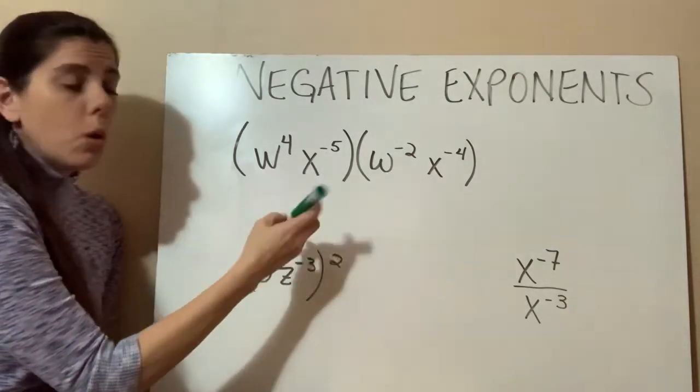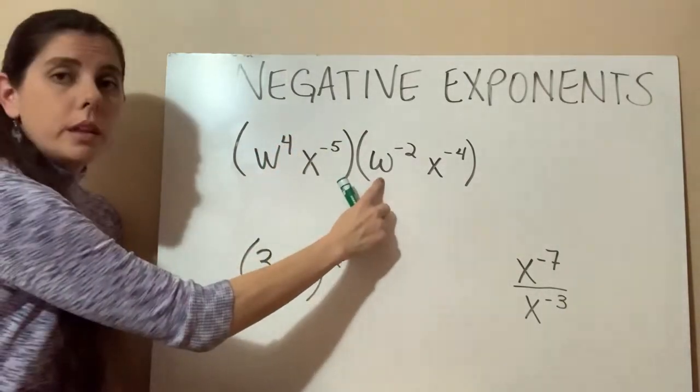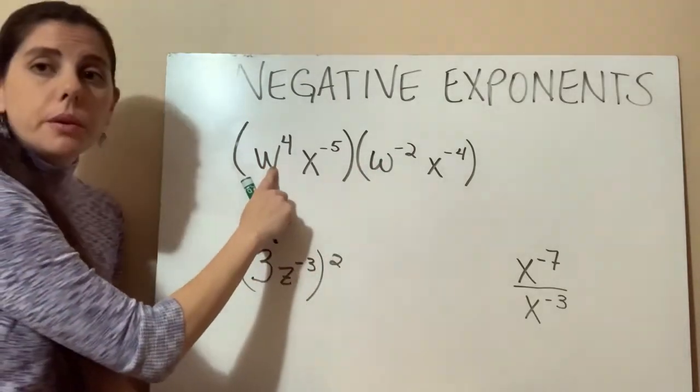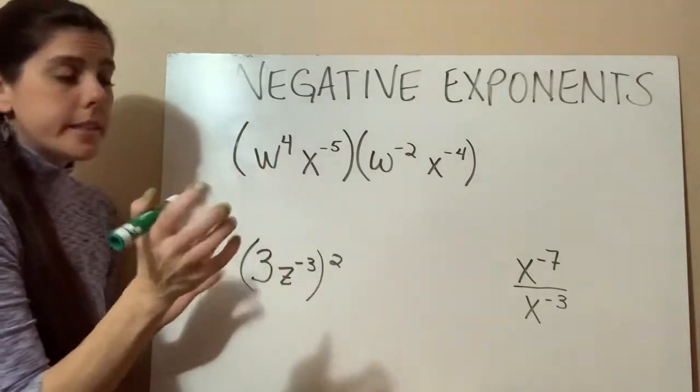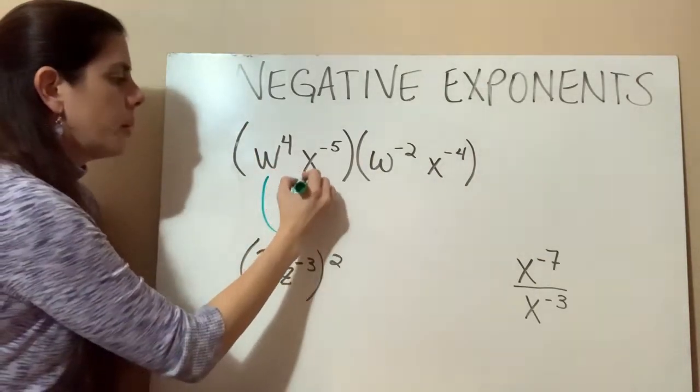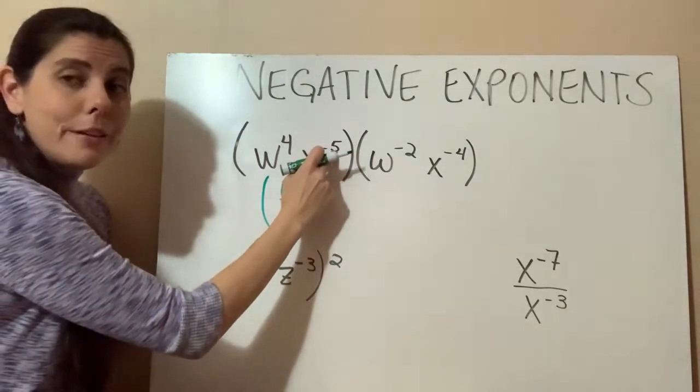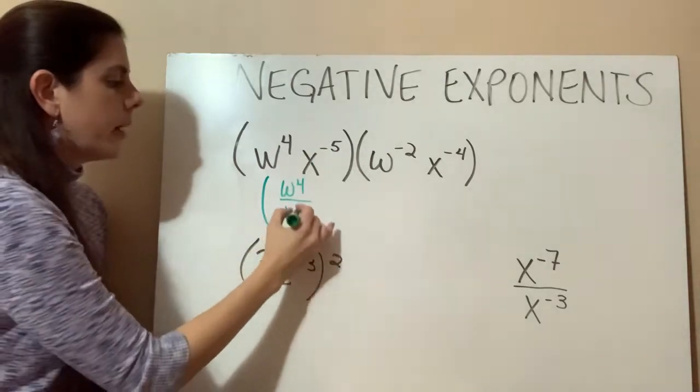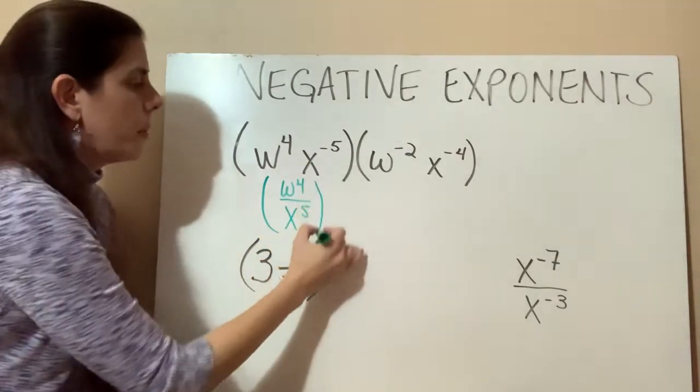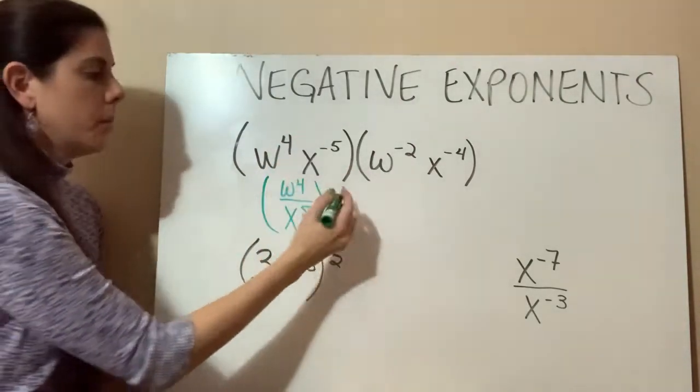So when we're moving, we're only moving the x with its exponent. The same thing with the w and the x over here. So this w to the 4th is going to stay where it is. We're going to have a set of parentheses where the w to the 4th is going to be on top. It's not moving anywhere. But this x to the negative 5 is going to become x to the 5, but on the bottom. So remember, we're taking the reciprocal with our negative exponents. Right now it's on the top. Now we're moving it to the bottom.